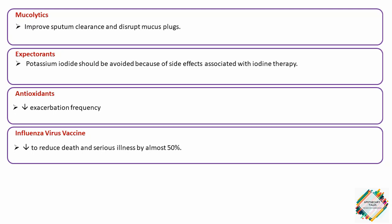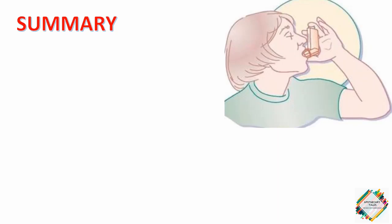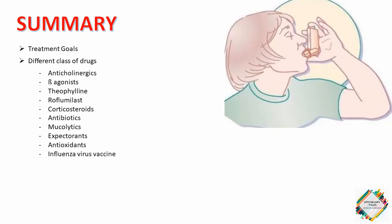In summary, this video has discussed the treatment goals endorsed by the GOLD guidelines and the different classes of drugs used in COPD management, which include anticholinergics, beta-agonists, theophyllin, roflumilast, corticosteroids, antibiotics, mucolytics, expectorants, antioxidants, and influenza virus vaccine. We hope you have clearly understood the pharmacological treatment aspects of COPD. For any doubts, concerns, or suggestions, please send us an email.